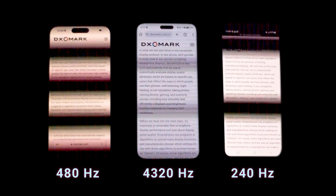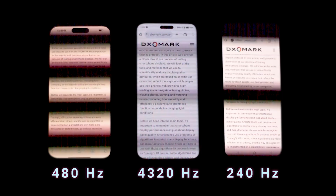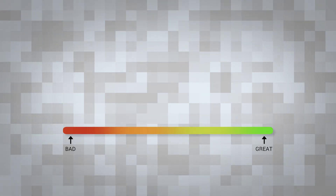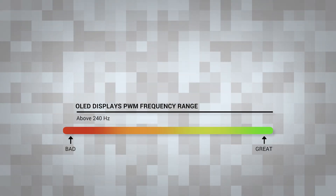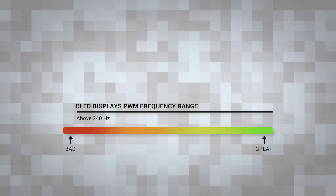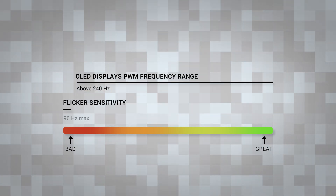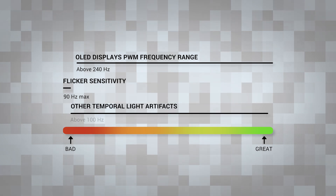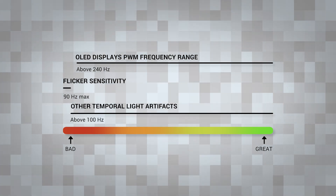You can see in this example devices with a variety of PWM. The range of PWM for OLED displays is above 240 Hz. For temporal light artifacts, some studies identify that flicker sensitivity can be present up to 90 Hz max, while other artifacts can be visible above 100 Hz.